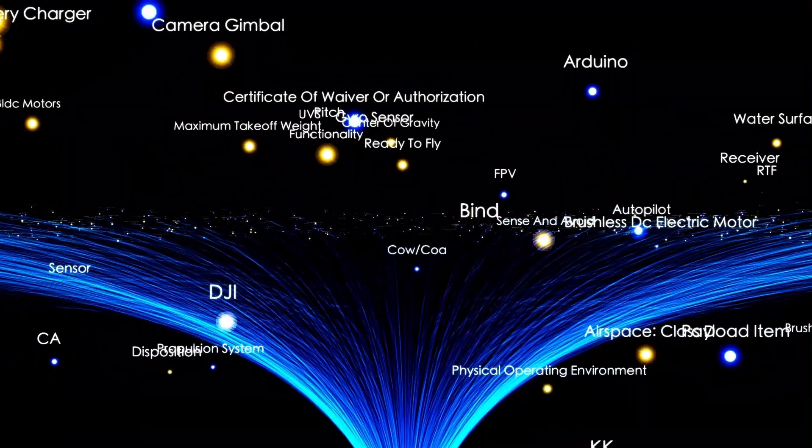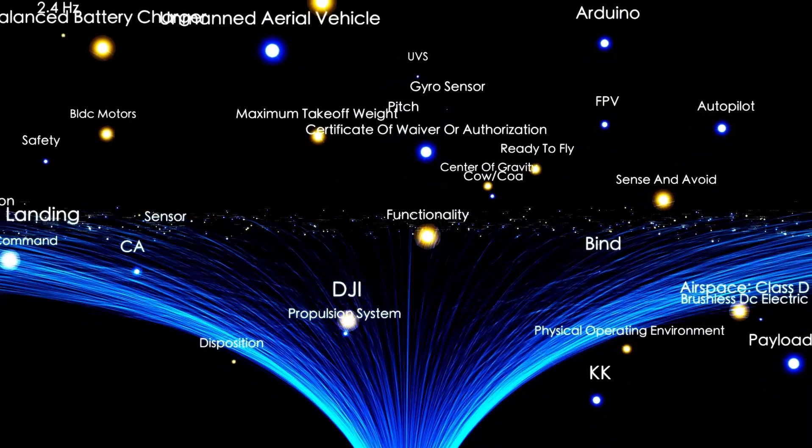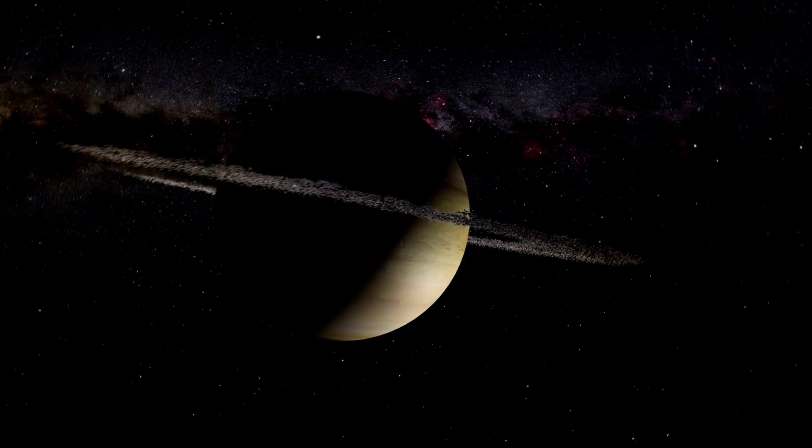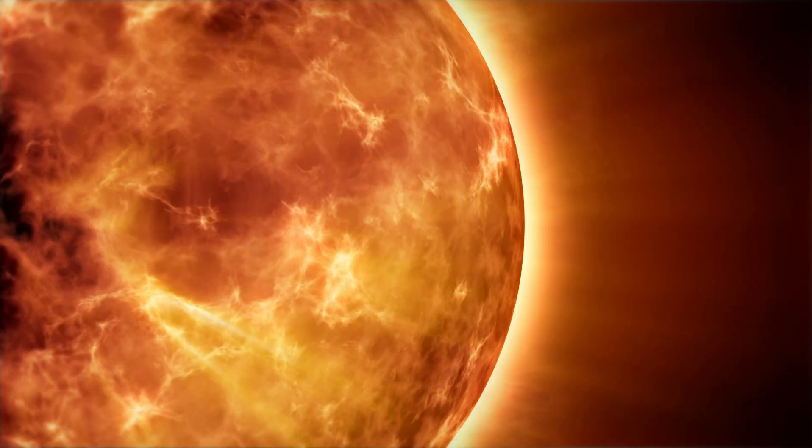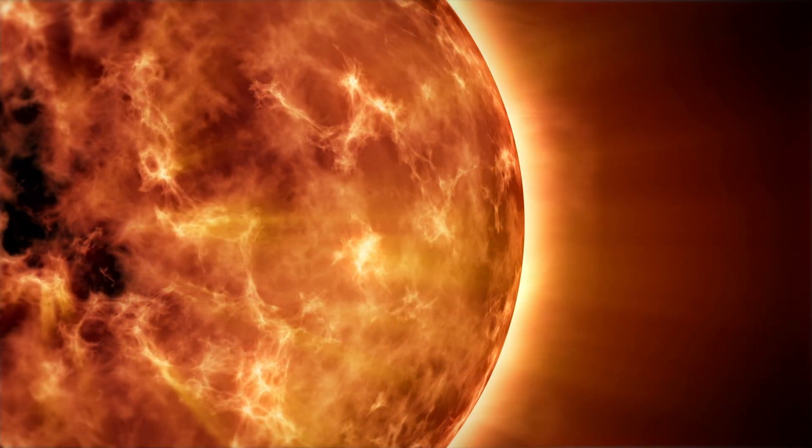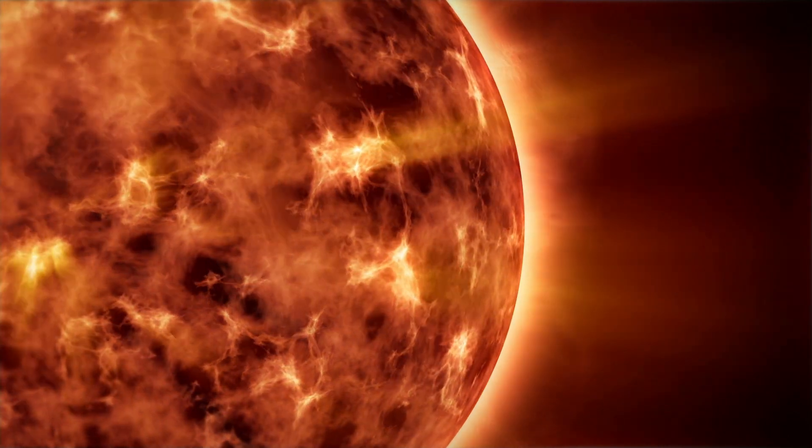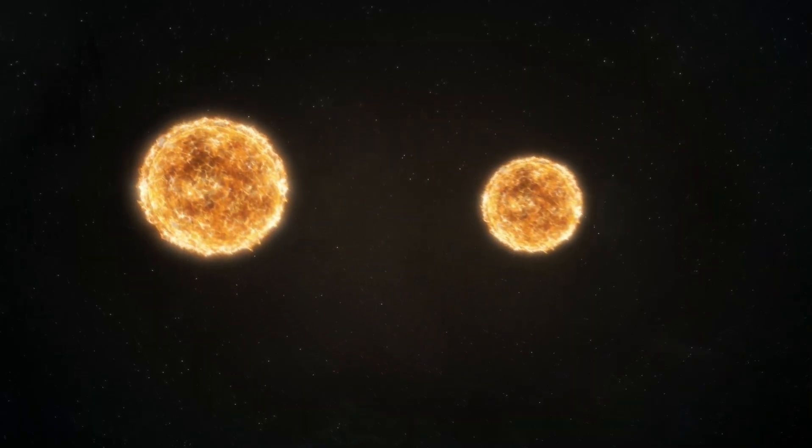Most people don't know this, but you can actually see Betelgeuse in the sky. If you're looking up at the night sky during the winter months in the Northern Hemisphere, you can't miss it. Just take a peek at the constellation Orion, and you'll spot it as the reddish-orange star that marks the upper left corner.